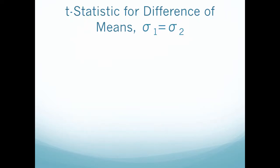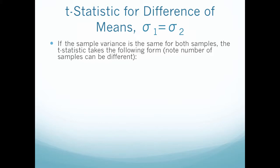So the first thing we're going to talk about is when my variances are equal. So we're going to be using t-statistic formulas for when my variances are equal. So if the sample variances is the same for both samples, the t-statistic takes the following form. So pay attention here that the number of samples can be different. So I have this beautiful formula. So I have t equals the difference in my sample averages minus the difference in my population averages, all over my pooled standard deviation times the square root of 1 over my first sample size plus 1 over my second sample size.